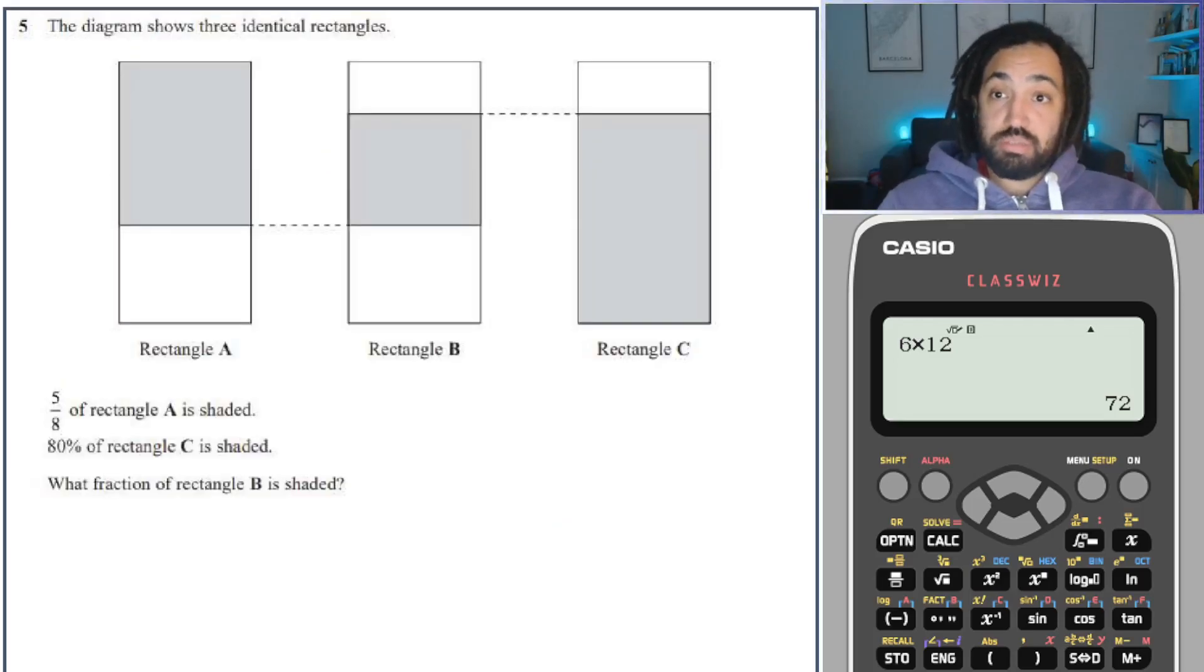Okay. Last question is a bit tricky. A little bit of problem solving needed here. We've got three rectangles. And what we know is that 5 eighths of rectangle A is shaded. So that's 5 eighths. And 80% of rectangle C is shaded. Okay. So when the question asked me, what is this amount here shaded in B? So give this one a go if you haven't already. And here is the solution.